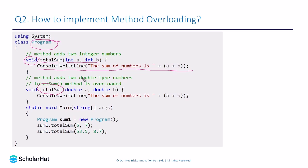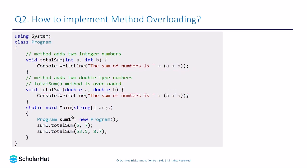The names of both methods are identical — TotalSum — but the data type of the parameter is different. In the first method we pass integer parameters, whereas in the second method we pass double parameters. This is compile-time polymorphism — the method name is the same but the type of parameter is different. Inside the second method we are also printing the input provided from the calling method.